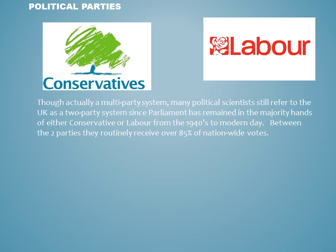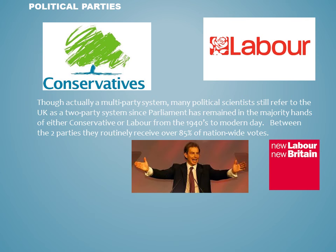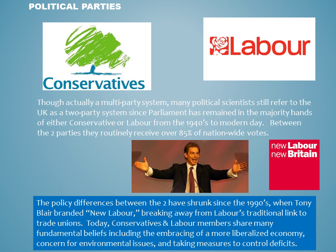Though the United Kingdom should probably be considered a multi-party system with increased representation in third parties, it is still considered by most political scientists to be a two-party system. That is because the two mainstream parties, the Conservatives and Labour, have pretty much held control of the House of Commons in each election since the end of World War II. Between these two parties, they receive over 85% of nationwide votes in general elections. Starting in the 1990s, the Labour Party felt that it needed to rebrand itself to stay competitive with the more traditionally popular Conservative Party, and because of this, the policy differences between these two mainstream parties have shrunken greatly.